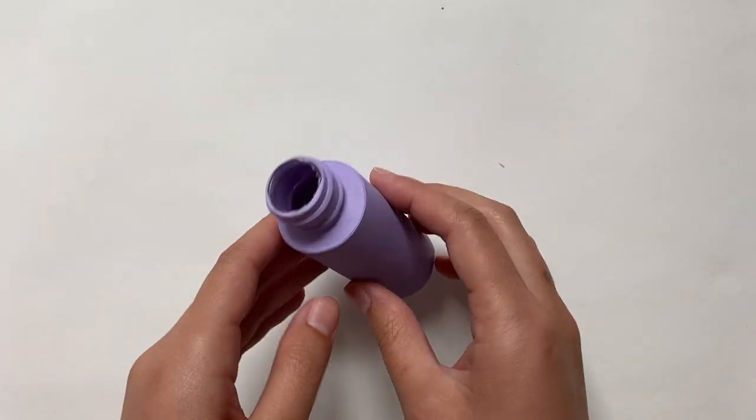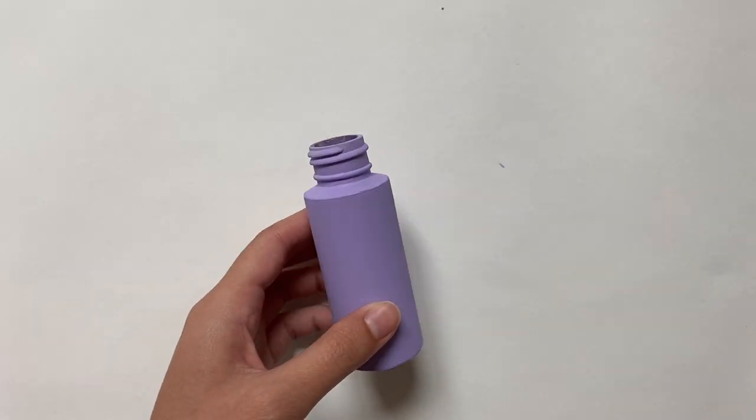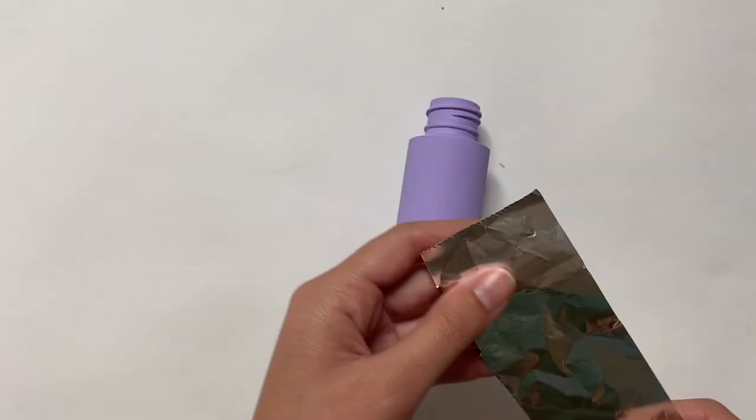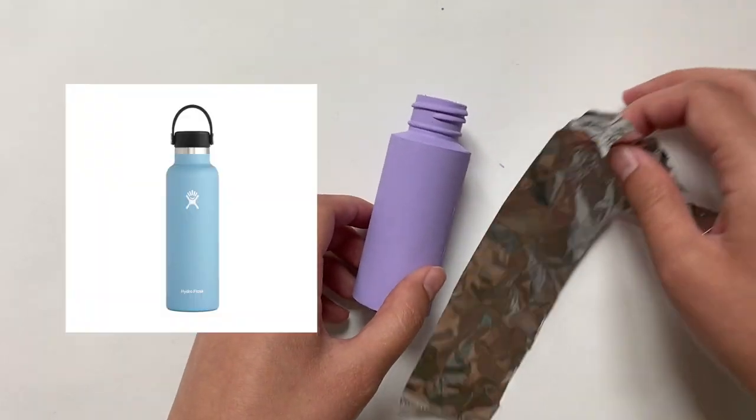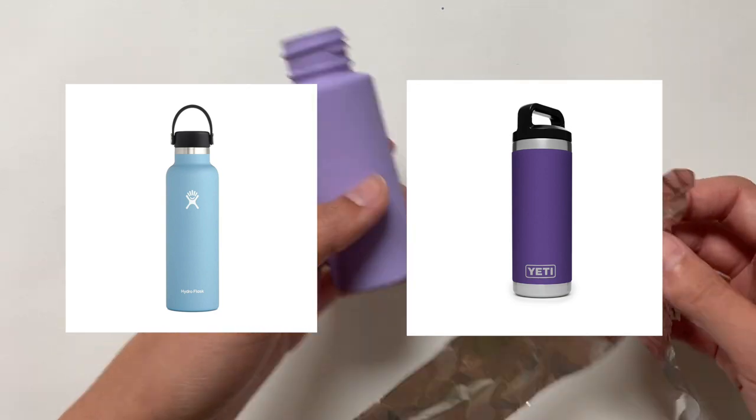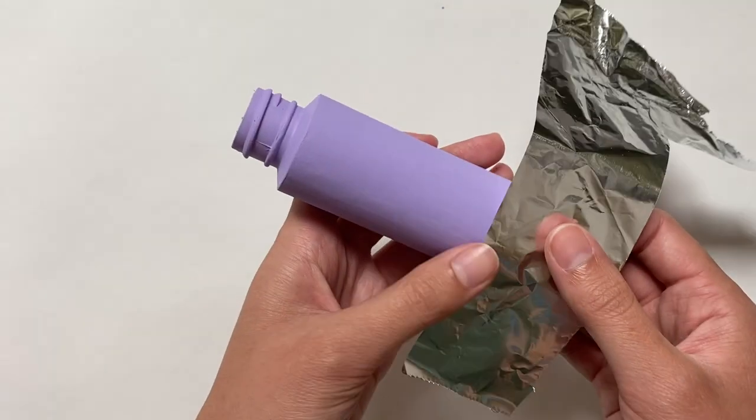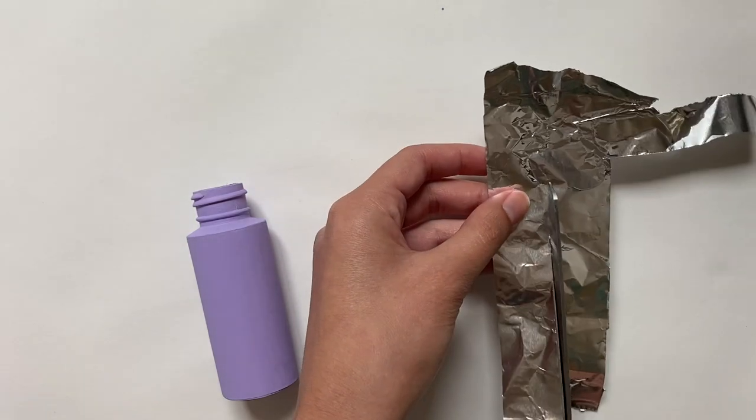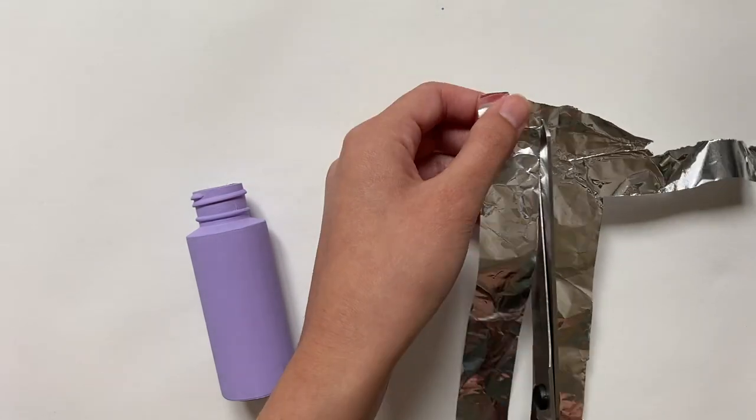After a few more coats and letting it dry, I have this nice smooth purple bottle, but I'm still gonna add one more thing to this and that's foil for the base. I was going for that hydro flask or a yeti water bottle kind of look and I just looked it up and turns out hydro flasks don't have this metal base, but it's okay. I guess I'll be making a yeti, but you can go for whatever kind of water bottle look you want.